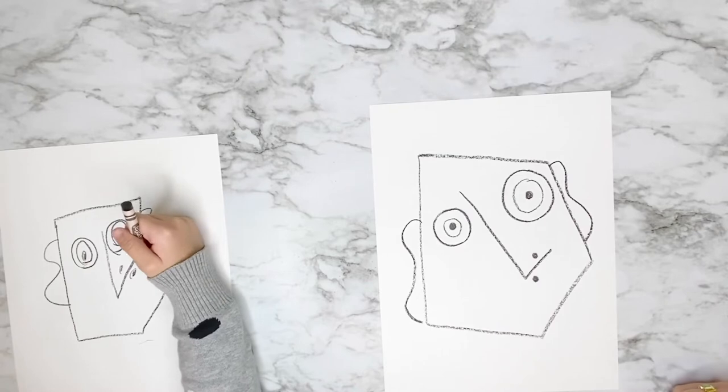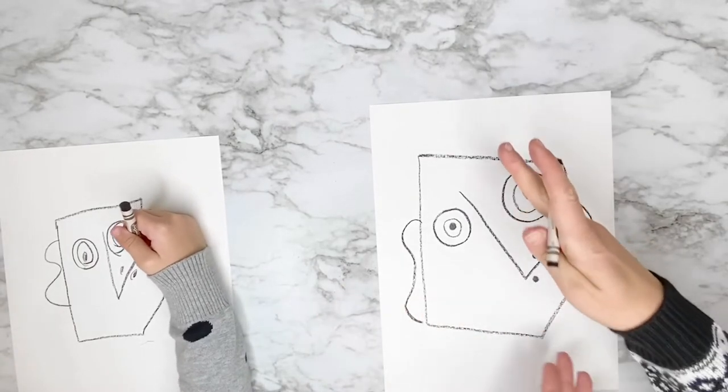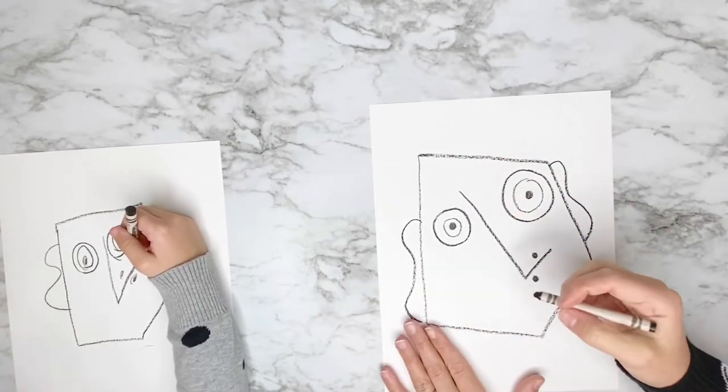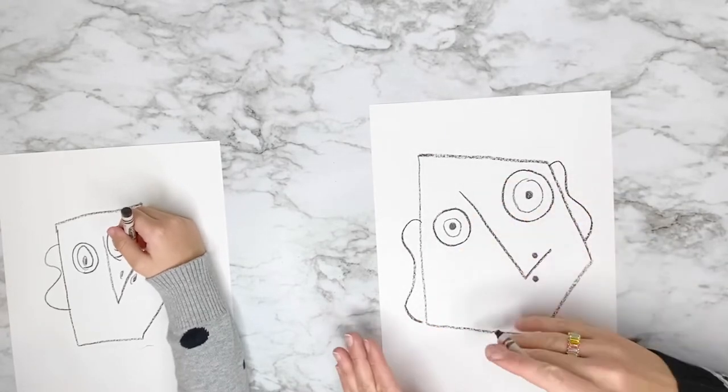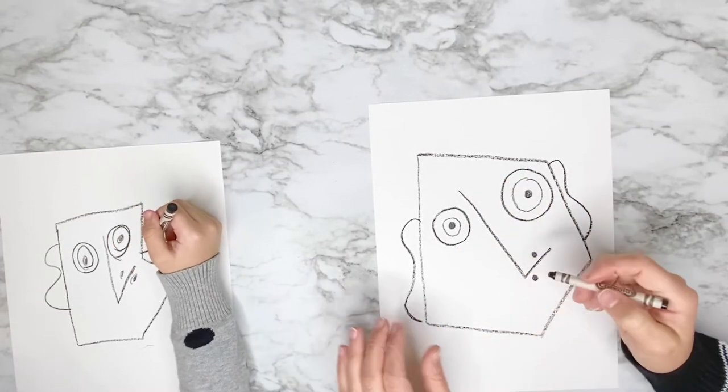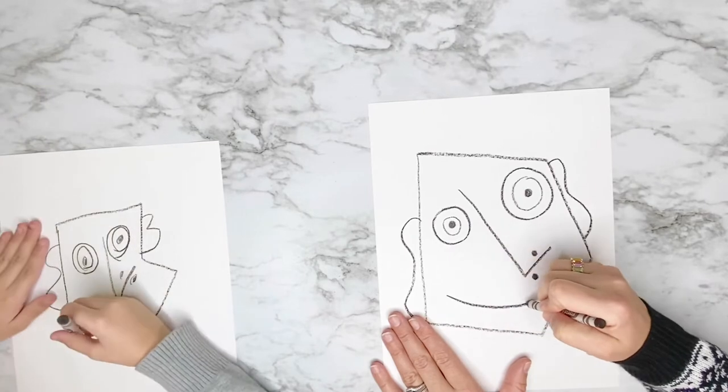Now we need to include lips. And so they can be sideways, really big, really small. It can be anywhere on the head that you want it. So include some lips.